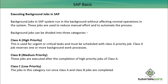Now let us look at background job categories. When you define a background job in your SAP environment, you can select from different options: Class A, Class B, and Class C. Class A represents high priority jobs — these are critical tasks that must be scheduled with Class A priority. Class A jobs reserve one or more background work processes.